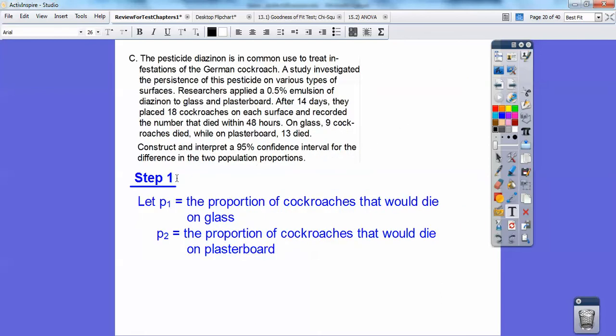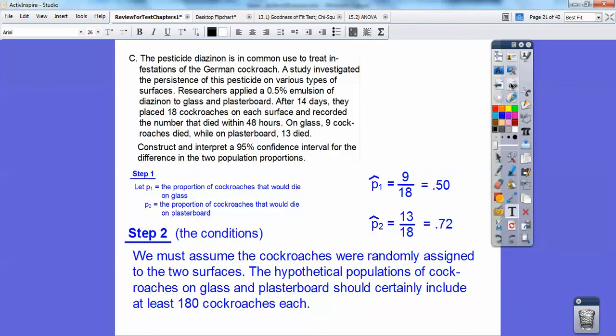So let's construct and interpret 95% confidence interval for the difference in the two population proportions. So step one, let's go ahead and state my P's. So P1 is going to be the proportion of cockroaches who died on the glass, and P2 is going to be on the plasterboard. And then we're doing a confidence interval. So my P hats are going to be 0.5 and 0.72. And so step two, we must assume that cockroaches were randomly assigned to the two surfaces. The hypothetical population of cockroaches on glass and plasterboard should certainly include at least 180 cockroaches each. So 10 times as many right there.